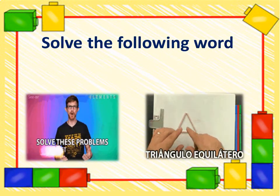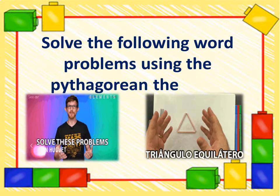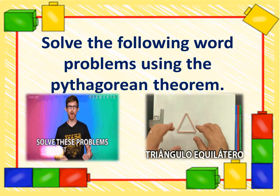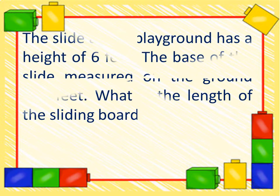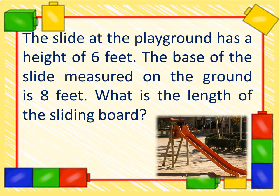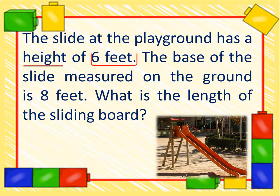Let's continue solving the following word problems using the Pythagorean theorem. It's time for us to apply the formula. The slide at the playground has a height of 6 feet. The base of the slide measured on the ground is 8 feet. What is the length of the sliding board?